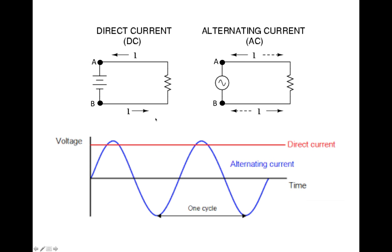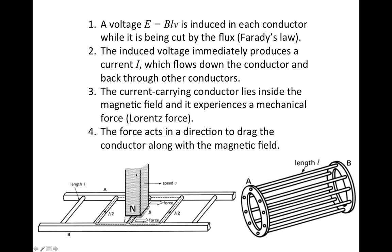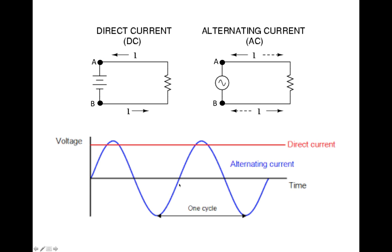In the conductor ladder example, the permanent magnet is moving relative to the conductors with a speed V, and the induced Lorentz force drags the conductor ladder along with the magnet in the same direction. The stator of the induction machine is not mechanically rotating. Nevertheless, the magnetic field created inside the stator is actually rotating, and this rotation is caused by the alternating current source.